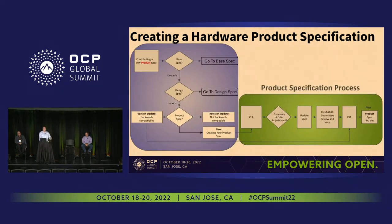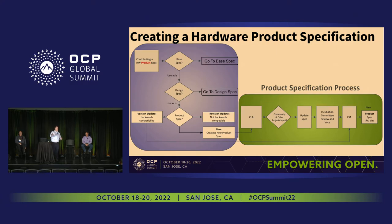Here's the hardware product specification process. In blue are your decision areas: Is there a base spec? You're going to use the existing base spec? Great, go to number two. Is there a design spec? Same process, and so on. Down to the green, this is the product specification process. At the end, that's when we want to move over to the foundation for product recognition.